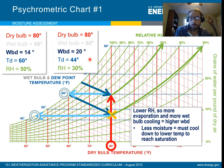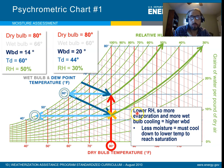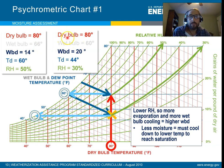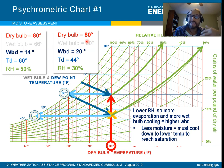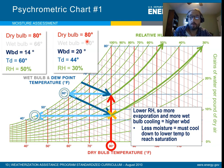A couple of lessons here. Number one, you can find any of the other variables as long as you have two of them. The other important thing to point out is that as you lower the relative humidity — the dry bulb stayed the same — because there's lower humidity in the air, there's less moisture, which means it's easier to evaporate. So you're going to get more evaporation on the wet bulb, which means more cooling, which means the wet bulb is going to drop and your wet bulb depression is going to go up.